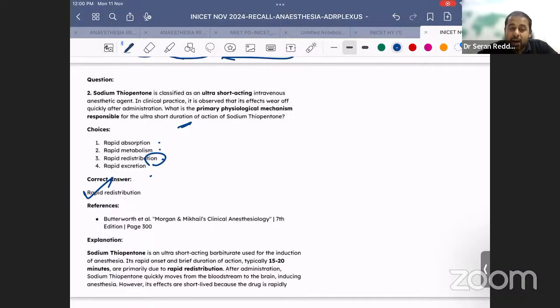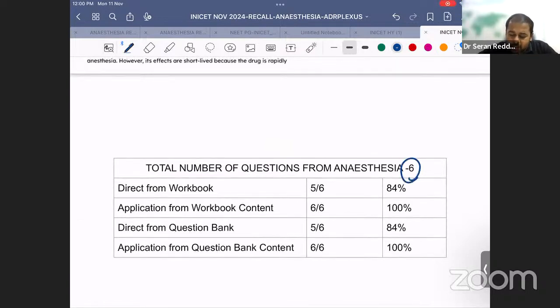This is how the questions have been written. I'm very happy to say that out of the total six questions asked from anesthesia, directly from workbook five out of six. The reason I said five out of six and application from workbook content six out of six is we know the concept of first generation and second generation supraglottic devices. But if the image would have been given, it would have been six out of six here also. Similarly, direct from question bank we have five out of six, and application from question bank content we are touching upon 100%. The workbook has been meticulously drafted and the question bank is completely curated by the faculty where we are able to touch, by God's grace, 100%.